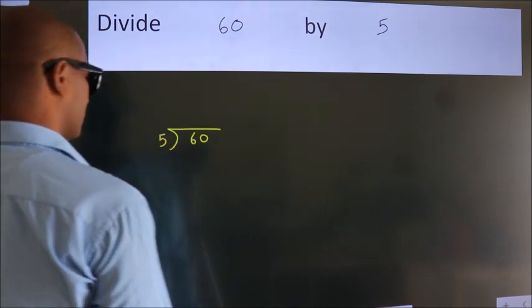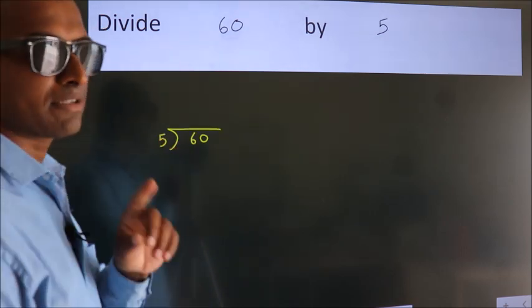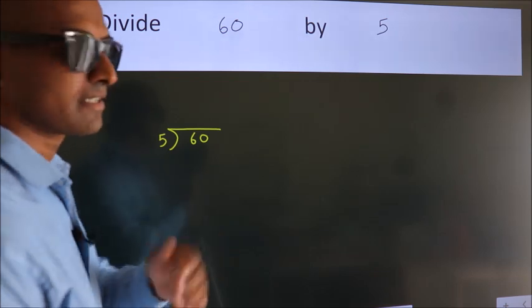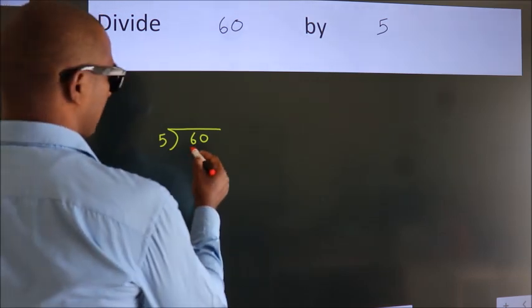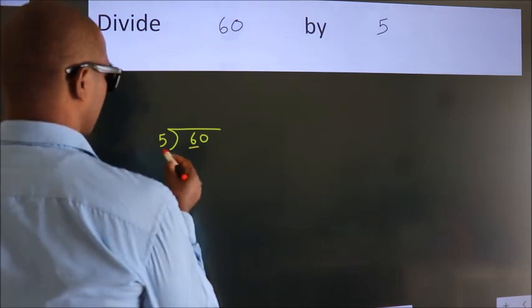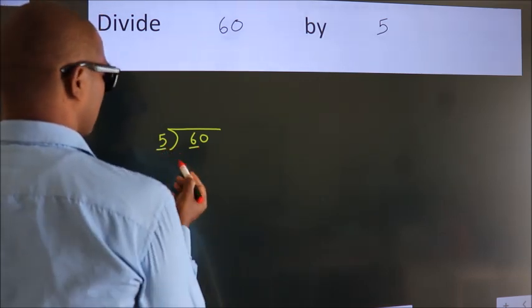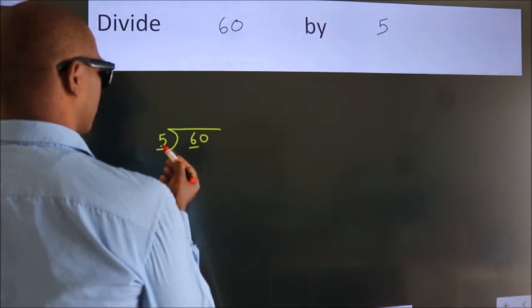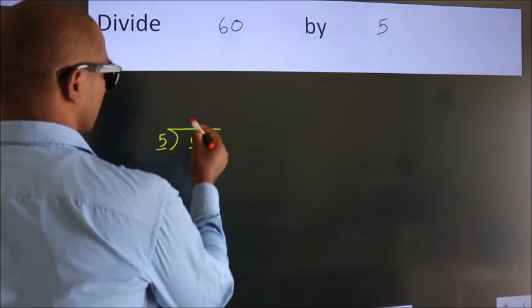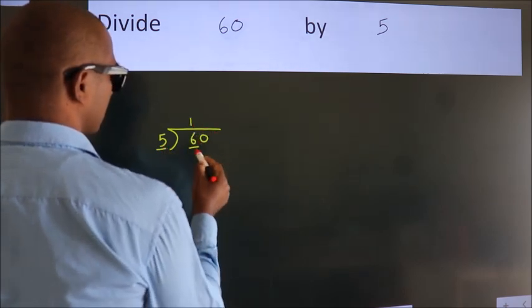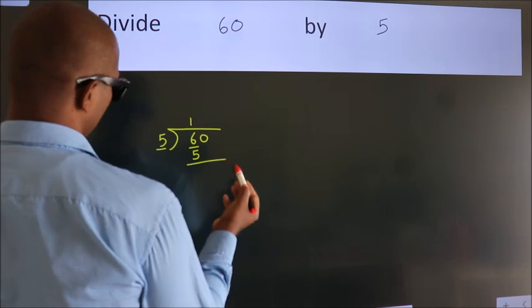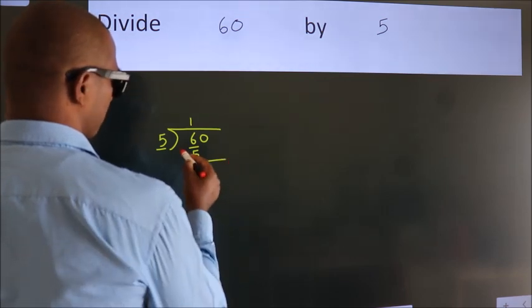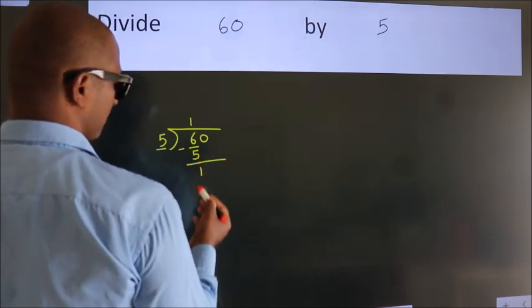This is your step 1. Next, here we have 6, here 5. A number close to 6 in the 5 table is 5 once 5. Now we should subtract. We get 1.